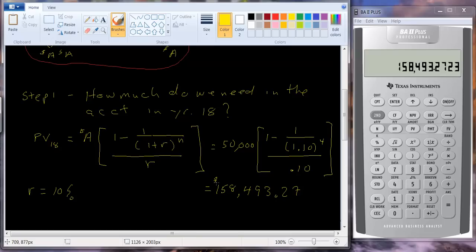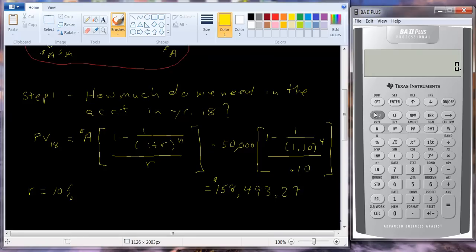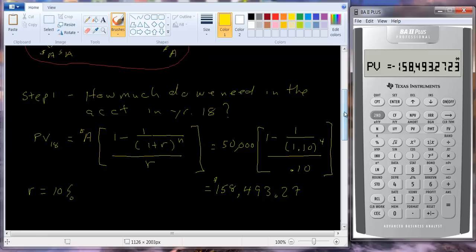Now, does the answer make sense? Well, remember you're earning interest on the money that's deposited. You're not going to take all the money out at once, and so you should need less than 200,000. If the interest rate was zero, then you would need $200,000. But the interest rate is not zero, it's 10%, so it should be less than 200,000. So that seems like a reasonable number. Let's draw the financial calculator. We know n is equal to 4. We know the interest rate is 10%. We know the payment is 50,000. And let's compute the present value. What do we get? 158,493.27. So good. We've got that right.